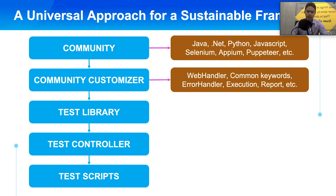In the community customizer, it is the time for you to build the layer on top of the community like a wrapper. The purpose is to hide the complexity of the community layer and provide the flexibility to adapt when the community layer changes. This is also the layer where you build the core basic activities of automation testing — a web handler to handle all browser controls, common keywords to deal with all browser interactions, an error handler to manage exceptions, and an execution and report engine to control the execution mechanism and retrieve results.